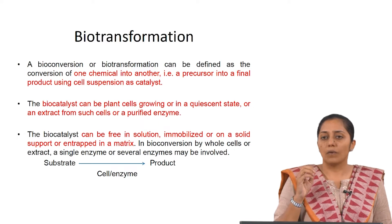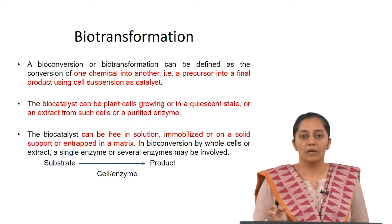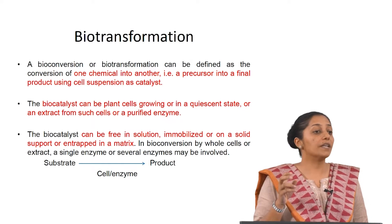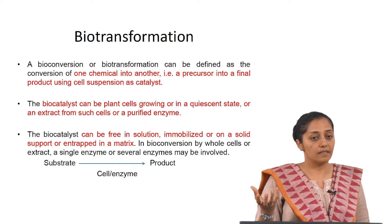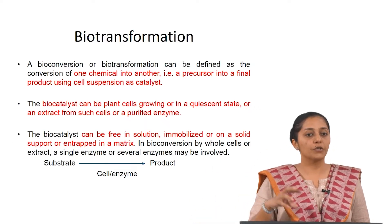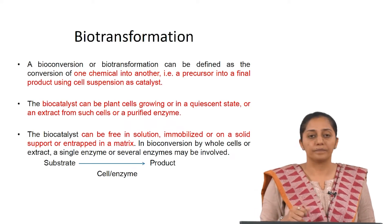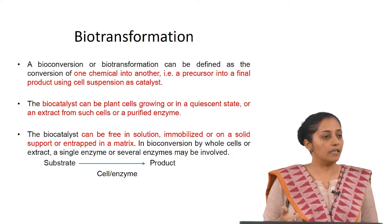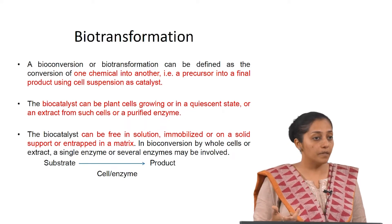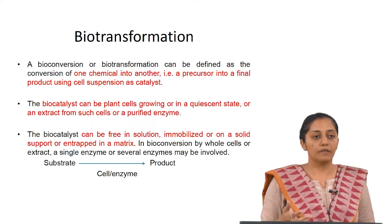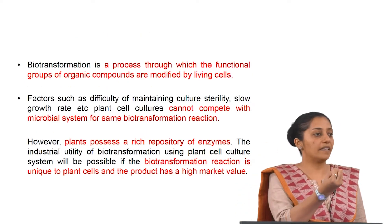One chemical is changed into another — the precursor is converted into a product using cell suspension or a biocatalyst. The biocatalyst can be plant cells in a growing state or in a quiescent (resting) state. The biocatalyst can be free in solution, immobilized on a solid support as a film, entrapped in a matrix, or encapsulated — different kinds of immobilization including surface immobilization or embedding.